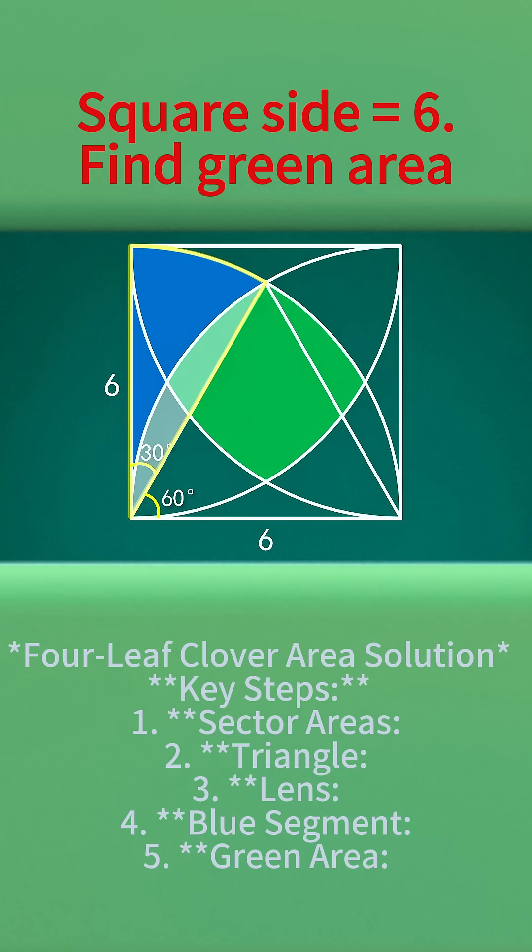Put it into the 60 degree sector. The segment area equals the area of the 60 degree sector minus the area of the equilateral triangle.